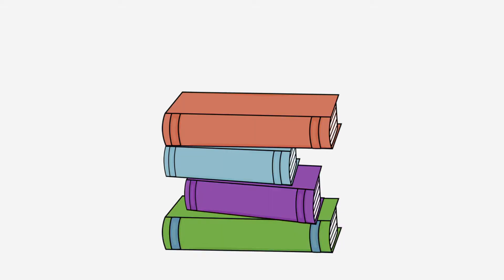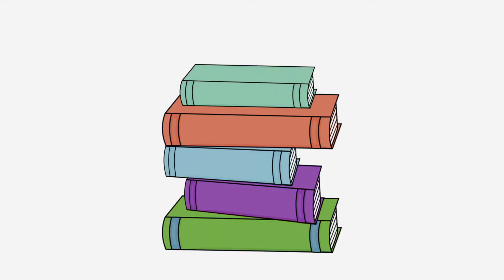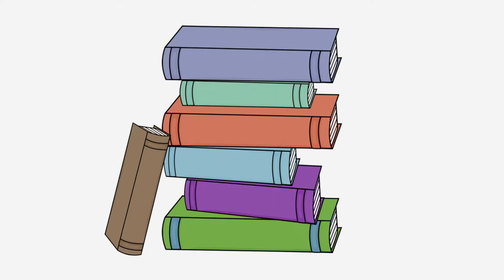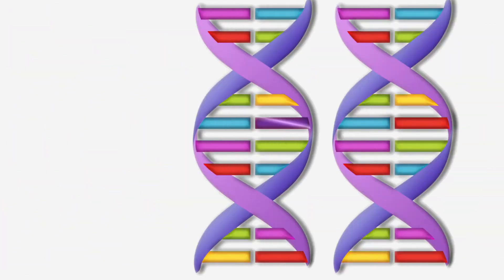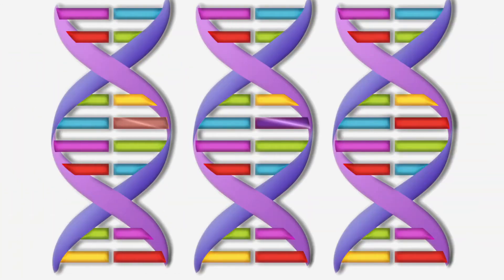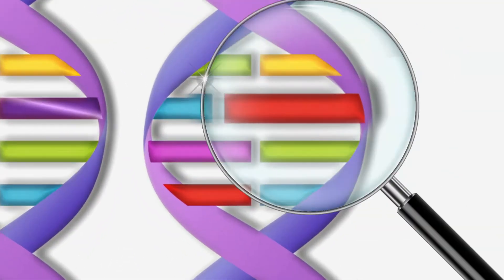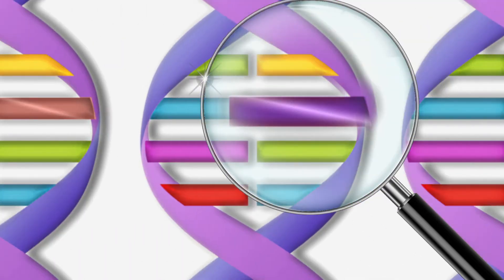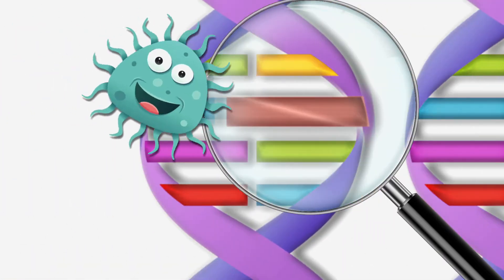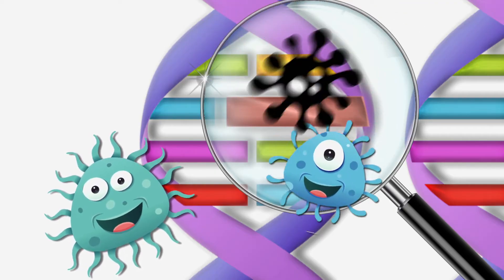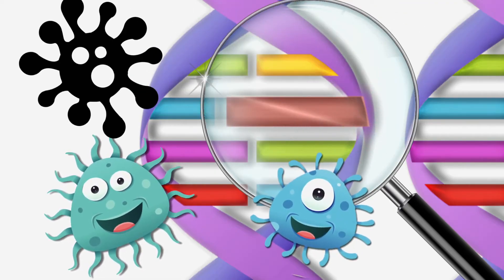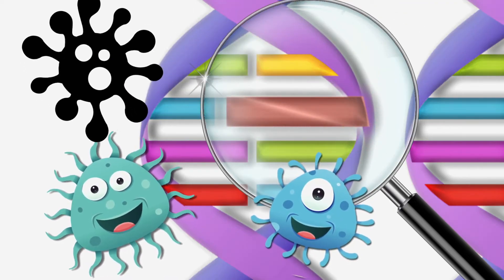It turns out that, just like books in the world are all subtly different from each other, genomes out there are subtly different from each other. One edition of a book might be slightly different from the previous edition. We can look for those tiny changes and use them to describe the relationships between bacteria, between viruses.